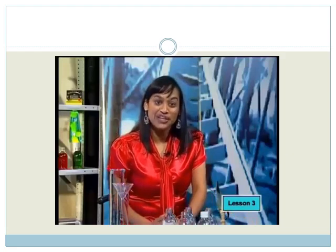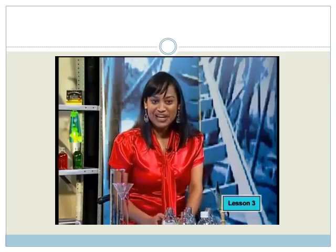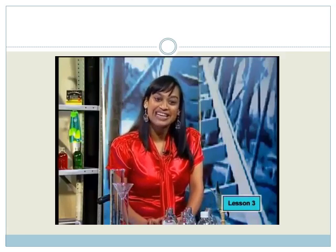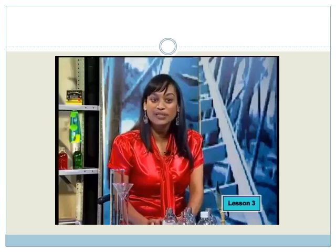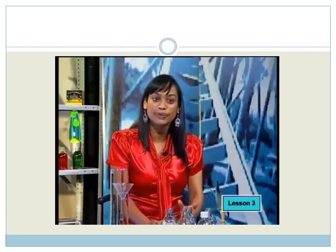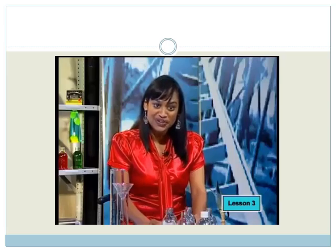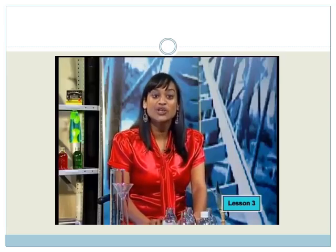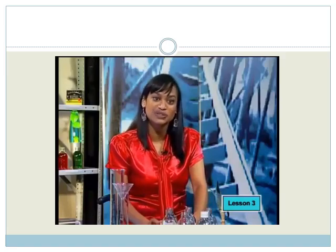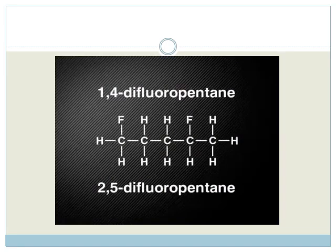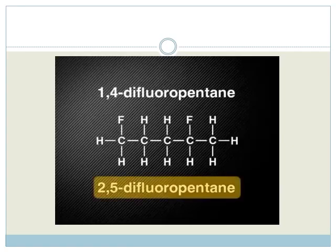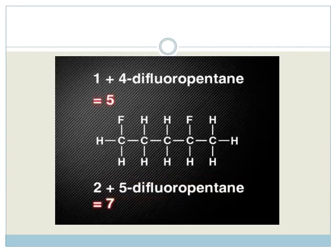You may be thinking that you could have numbered differently, and so got a different name. Here's a tip for numbering the carbon atoms if there are no double or triple bonds in the structure. Always number the carbon atoms so that the numbers add up to the lowest possible number. This molecule could be incorrectly numbered as 2,5-difluoropentane. But 2 plus 5 is 7, and 1 plus 4 is 5, making this the correct numbering system to use.